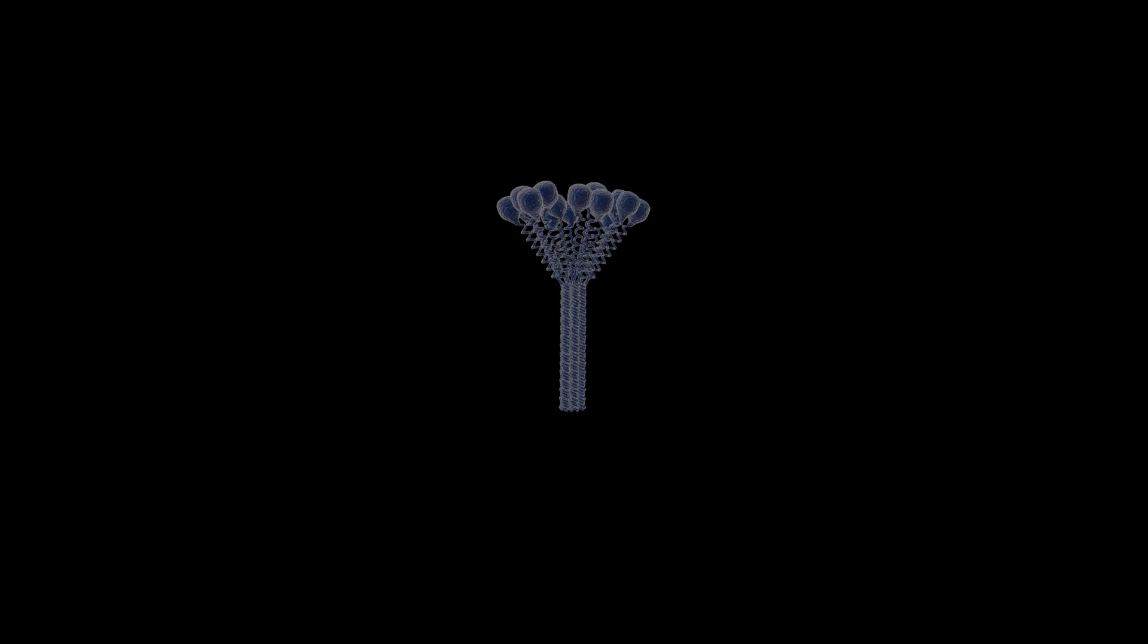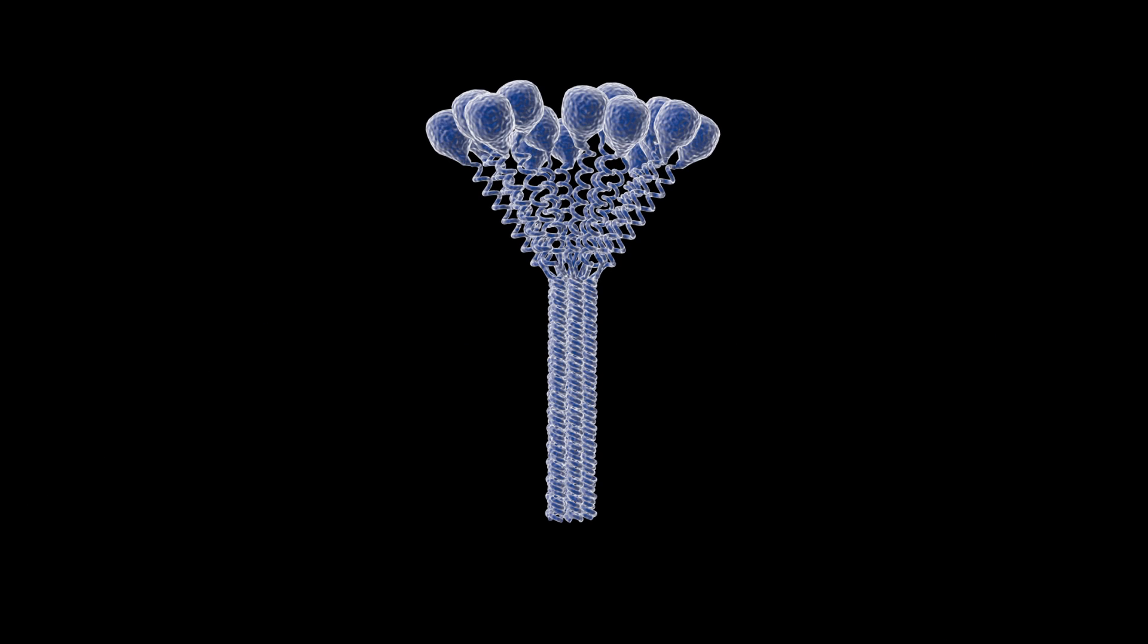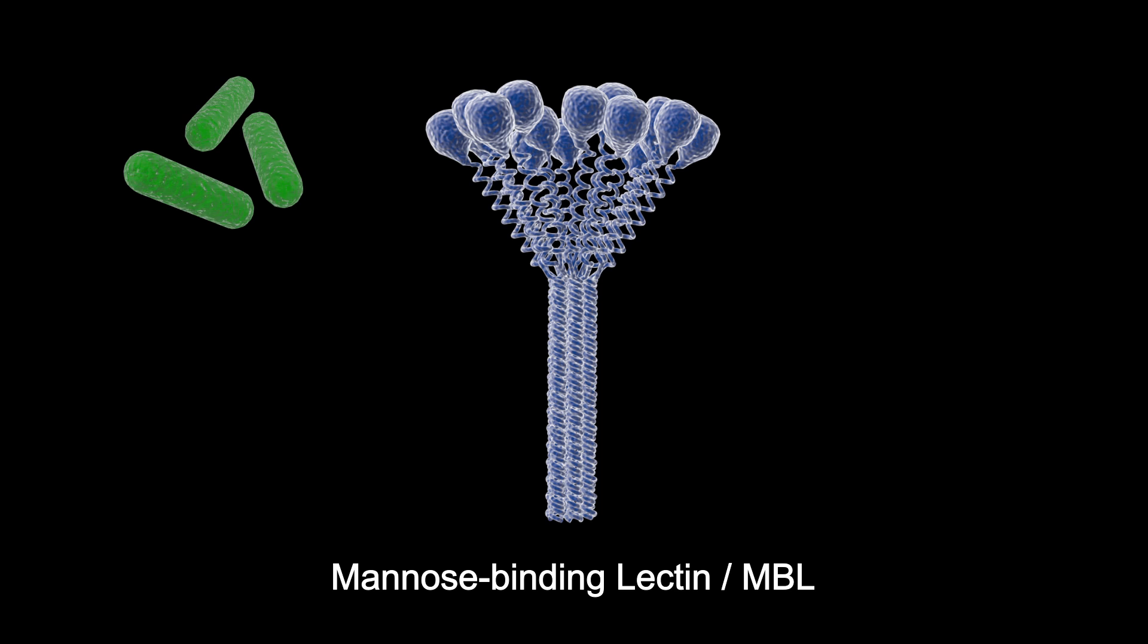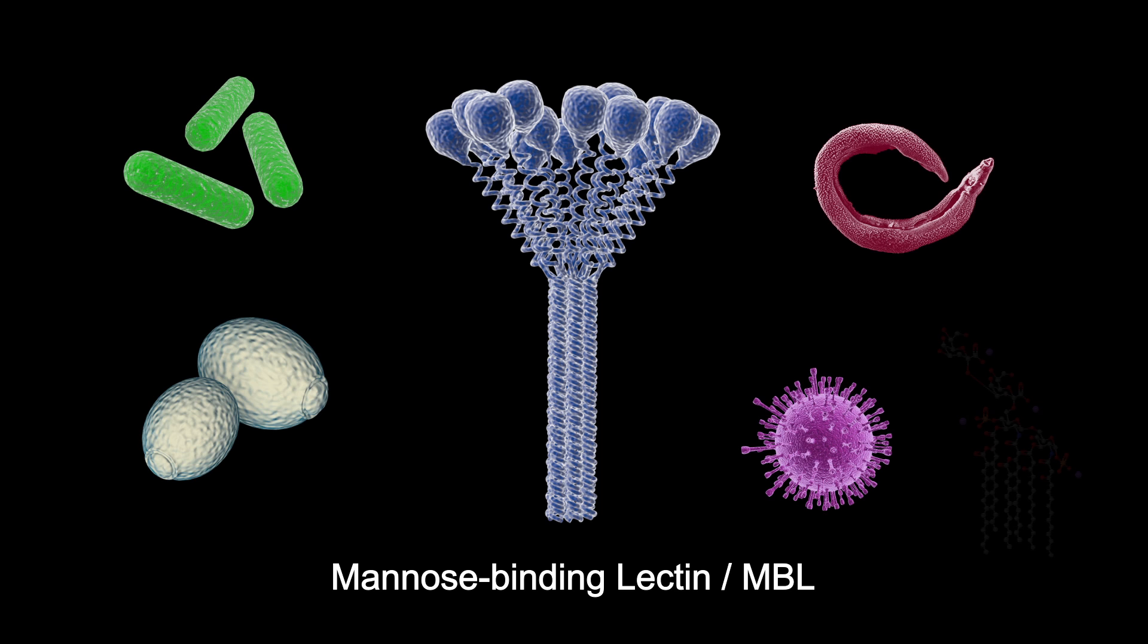This blood-cleansing approach leverages the pathogen-binding functions of a natural blood protein called mannose-binding lectin, or MBL. MBL binds to many different types of bacteria, fungi, viruses, parasites, and toxins.